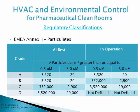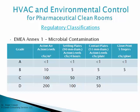EMEA Annex 1 provides specifications for both at rest and in operation conditions. For grade A — approximately equivalent to ISO class 5 — the limit is not more than 3,520 particles per meter cubed of 0.5 microns in diameter. They also have specifications for 5-micron particles. EMEA additionally has specifications for microbial clothing.